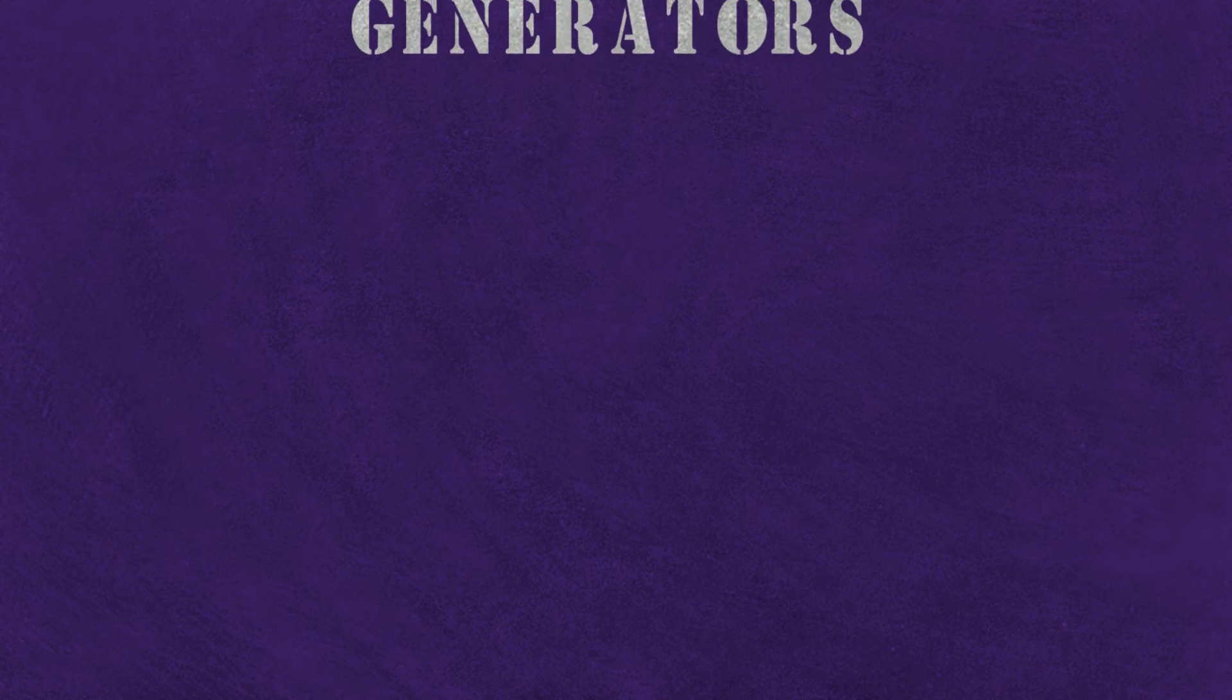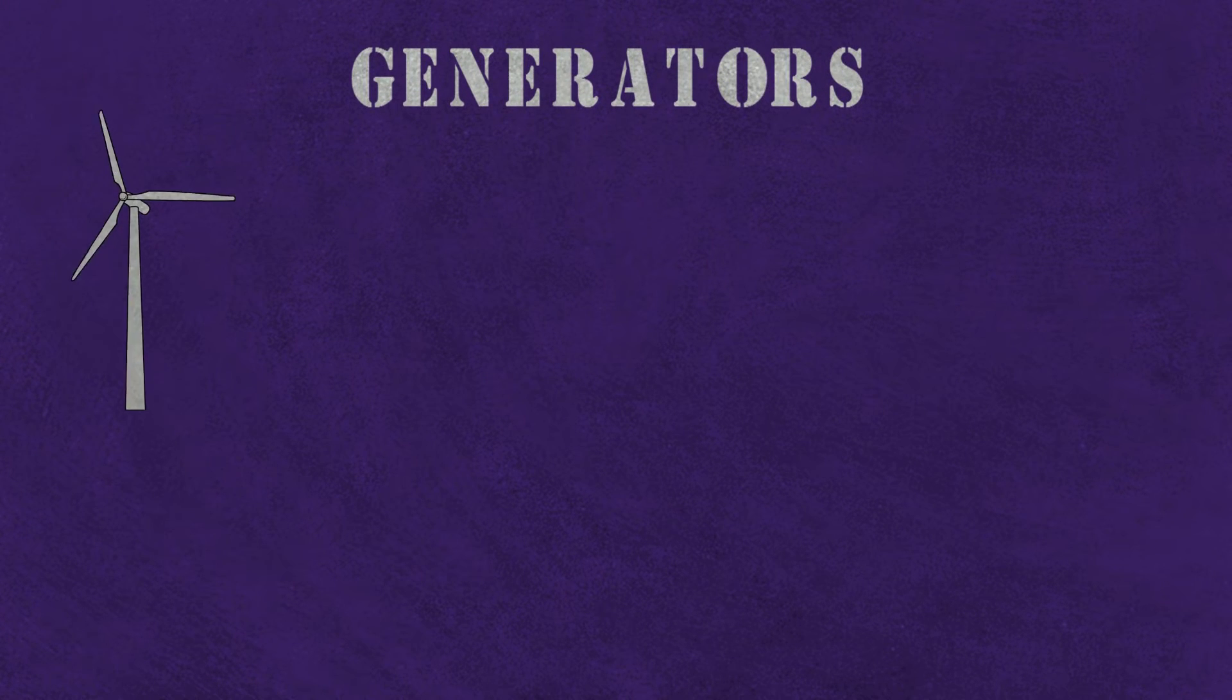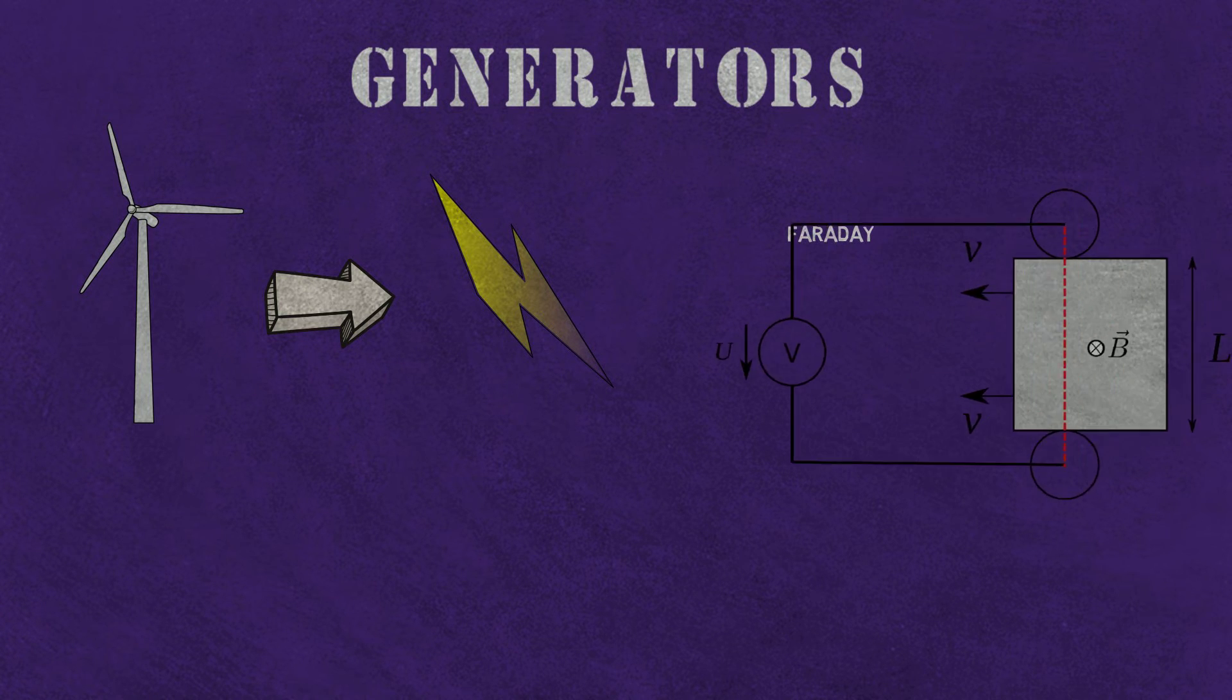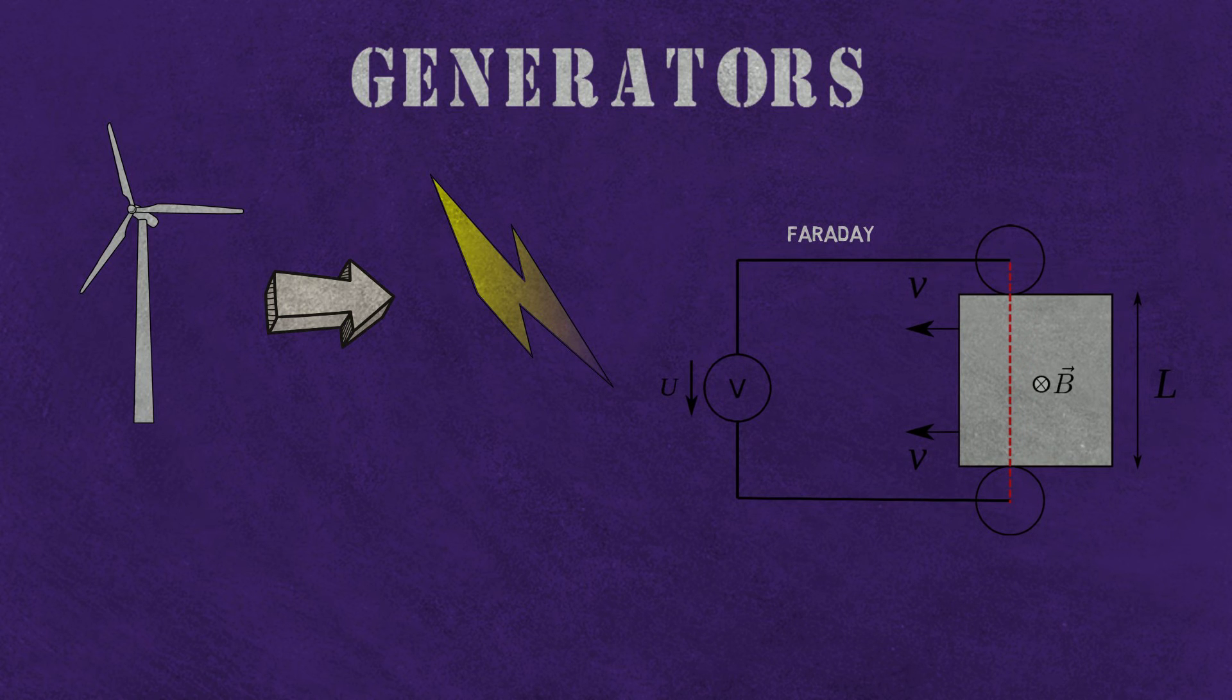The first, generators. Generators convert one form of energy into electrical energy. Generators began with a concept discovered by Michael Faraday known as electromagnetic induction. Electromagnetic induction basically describes how mechanical energy can be transformed into electrical energy by constantly changing a magnetic field.